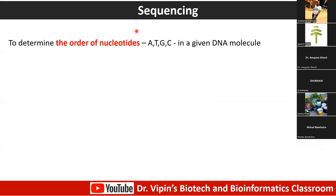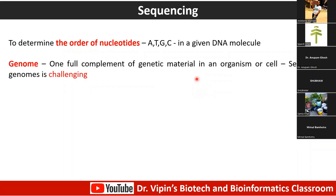Let's get back to basics. Sequencing means you are looking at the order of nucleotides in a given nucleic acid molecule. There are four nucleotides — A, T, G, and C — and the order in which they appear results in a code that can allow for coding a protein, encoding a site where a protein can bind, transcription factor binding, chromatin modification, and so on. So sequencing becomes important. The genome is one full complement of genetic material in an organism or a cell.